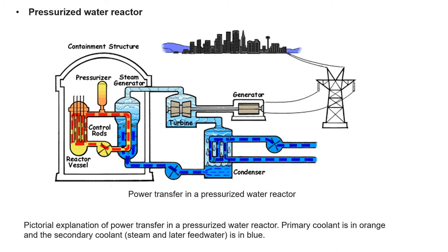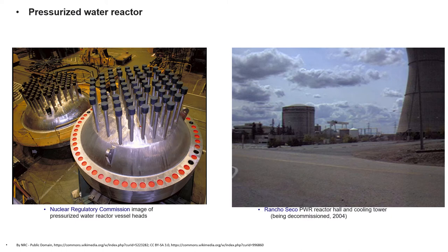Pressurized water reactors were originally designed to serve as nuclear marine propulsion for nuclear submarines and were used in the original design of the second commercial power plant at Shippingport Atomic Power Station. Pressurized water reactors currently operating in the United States are considered Generation 2 reactors. France operates many pressurized water reactors to generate the bulk of its electricity. Shown here are some components of a pressurized water reactor, including nuclear regulatory commission images of reactor vessel heads, and the Rancho Seco pressurized water reactor hall and cooling tower being decommissioned during 2004.